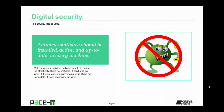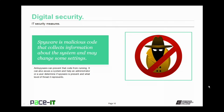Now let's move on to anti-spyware. Anti-spyware is closely related to antivirus — in fact, a lot of antivirus software packages have anti-spyware built into them. Spyware is malicious code that collects information about a system. It may change some system settings, but primarily it collects information and sends that information off to a remote site. Anti-spyware can prevent that code from running, and can also assess a system to help the user determine if spyware is present and the level of threat it represents.